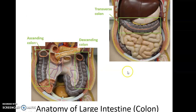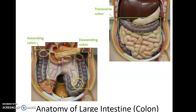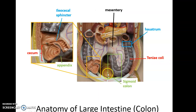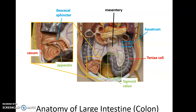The large intestine starts with a compartment called the cecum. Material travels up the ascending colon, across from right to left via the transverse colon, down the left side via the descending colon, and then the sigmoid colon leads to the rectum, anal canal, and anus. The cecum receives material from the ileum of the small intestine through a valve called the ileocecal sphincter, which controls movement from the ileum to the cecum.